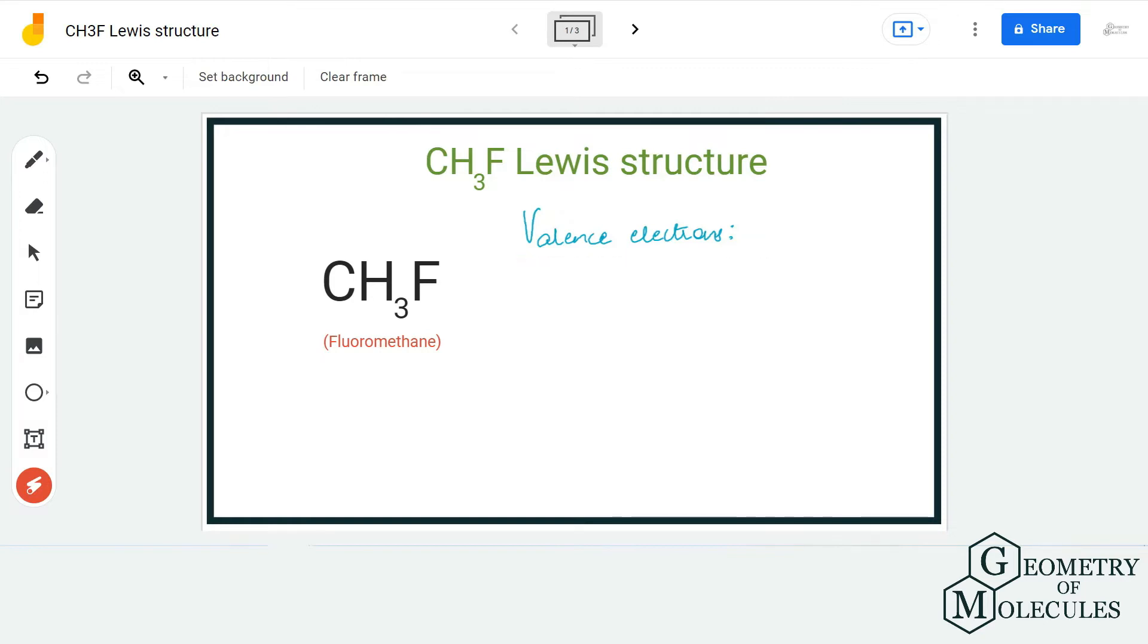So here we have one carbon atom that has four valence electrons in its outer shell. Each hydrogen atom has one valence electron in its outer shell.